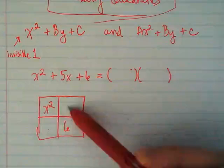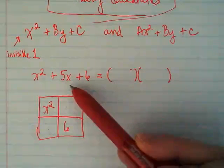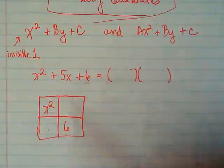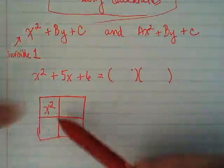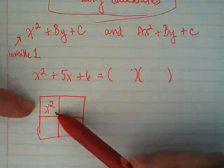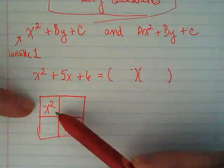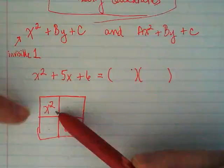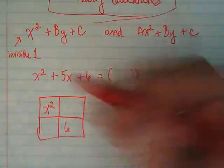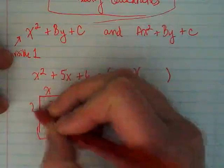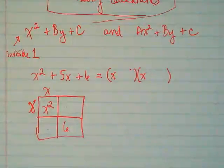What happens with these two boxes? They're combining like terms to find this. So we're basically playing math detectives. What do we know must be multiplied to get x squared? It's going to be x times x. And if we have x times x, we know those go in the parentheses.